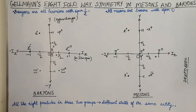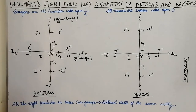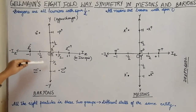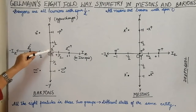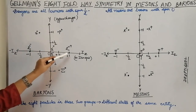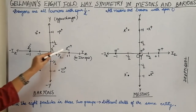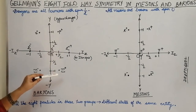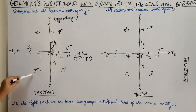This is the baryon family. We have considered the particles, not the antiparticles — though the same way we represent particles, we can also represent antiparticles. In this family we have eight particles: sigma naught, lambda naught, neutron, proton, and the three sigmas — sigma plus, sigma minus, and sigma naught — and the cascades, that is cascade neutral and cascade negative.